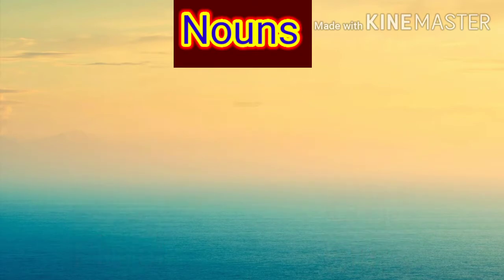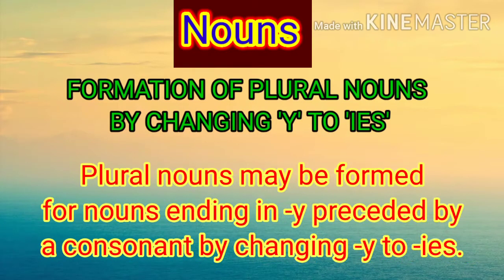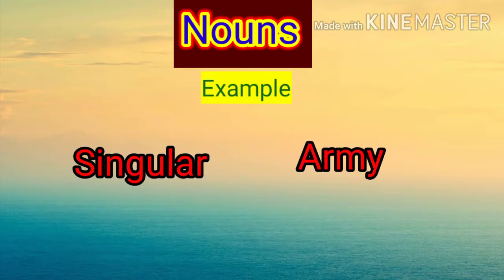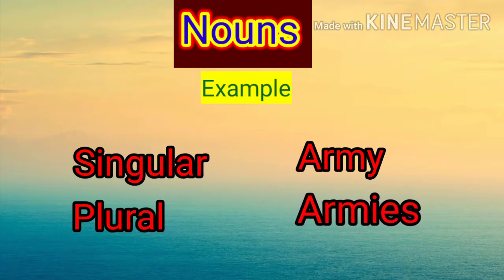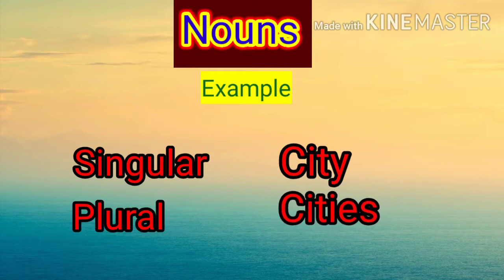Next heading: formation of plural nouns by changing -y to -ies. Plural nouns may be formed for nouns ending in -y preceded by a consonant by changing -y to -ies. For example: army (A-R-M-Y) — plural form will be armies (A-R-M-I-E-S); story — stories; city — cities.